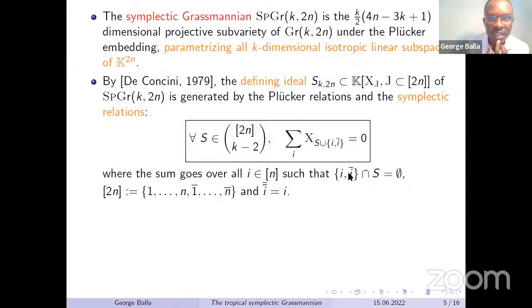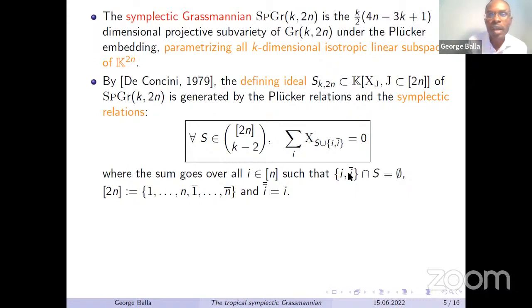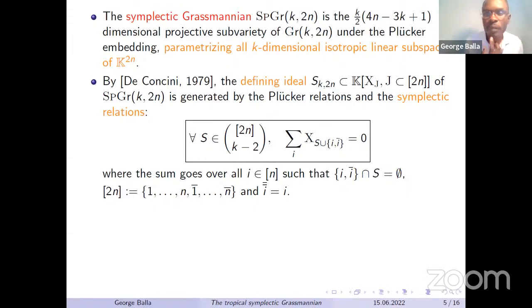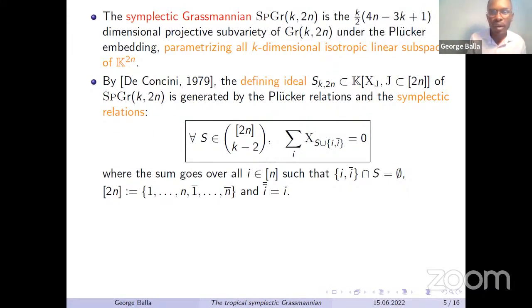What is the symplectic Grassmannian? Like the Grassmannian, the symplectic Grassmannian is also a projective variety. It is a sub-variety of the usual Grassmannian parameterizing k-dimensional linear subspaces. The extra condition: we don't take all linear subspaces, but only the isotropic linear subspaces — those which correspond to orthogonal vectors with respect to our symplectic form. So it is a subset of the usual Grassmannian, and even more, it is a sub-variety.